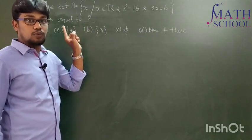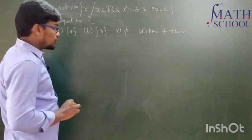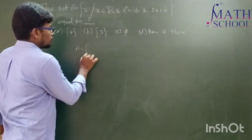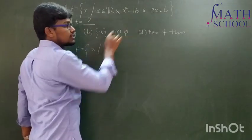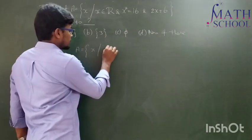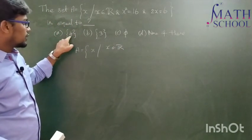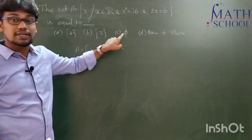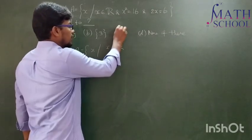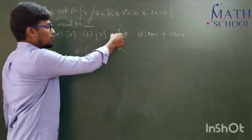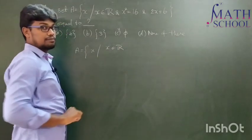Let us solve it. First of all, we should understand that A equals x such that x should satisfy these conditions. The first condition says x has to be a real number. Look at the options: this set contains real numbers, this set contains real numbers, but the empty set does not contain any real numbers. So we can eliminate the empty set option because it has no real numbers, but set A should contain real numbers.